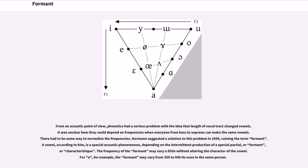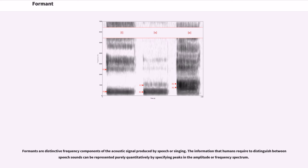Formants are distinctive frequency components of the acoustic signal produced by speech or singing. The information that humans require to distinguish between speech sounds can be represented purely quantitatively by specifying peaks in the amplitude or frequency spectrum.